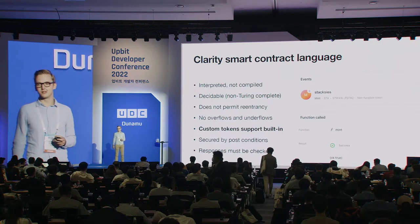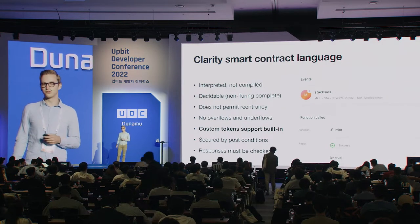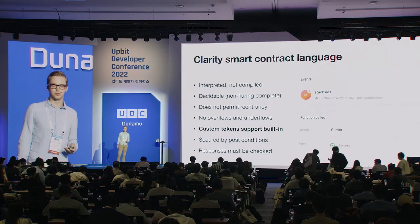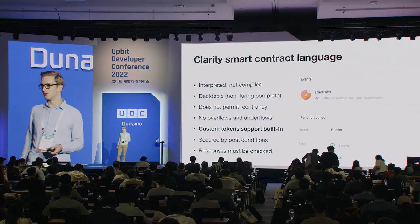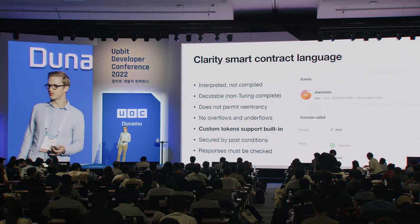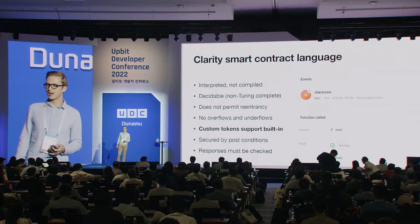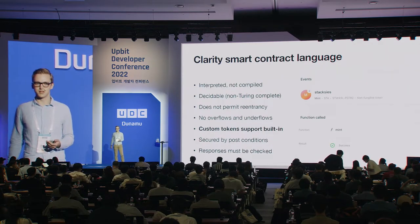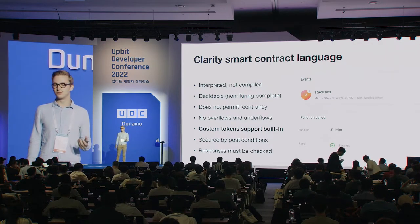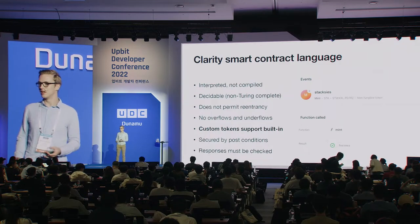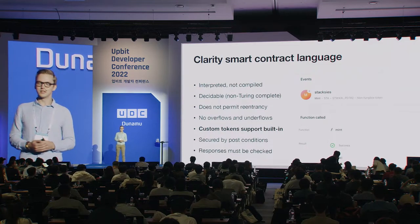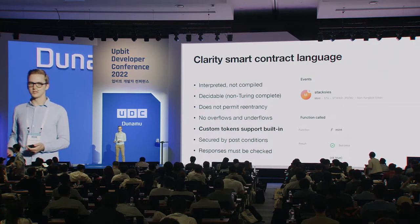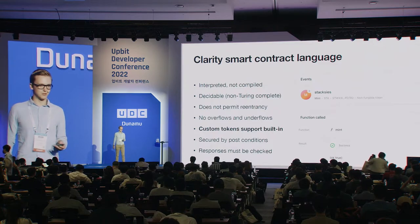Clarity has built-in support for custom tokens, making it easier for developers to define fungible tokens and non-fungible tokens. These token events are part of the blockchain events, so when a new token is minted you can clearly see that happen, and you can protect these with post conditions.